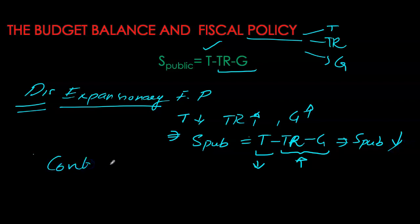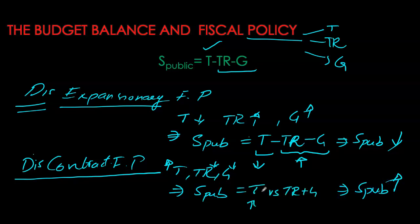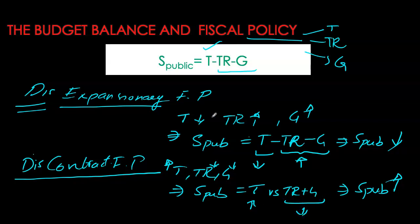Contractionary fiscal policy does the exact opposite — taxes go up, transfers and government purchases are reduced, so public savings move towards a surplus. Whenever a government announces a deficit, it is telling us it will stimulate aggregate demand through these tools. Conversely, a government aiming for a budget surplus will be contracting the economy. So intentional budget surpluses are synonymous with discretionary contractionary fiscal policy, whereas intentional deficits are synonymous with discretionary expansionary fiscal policy.